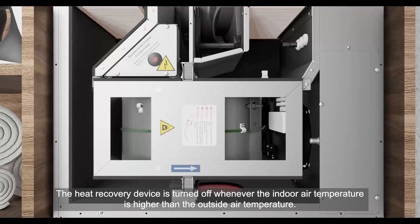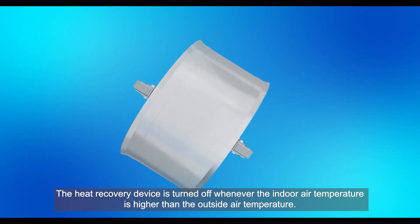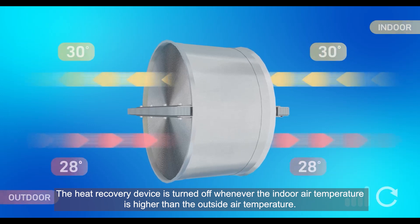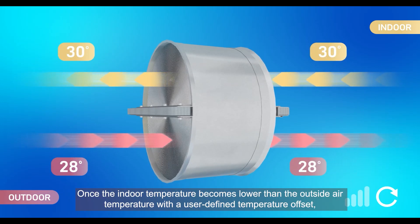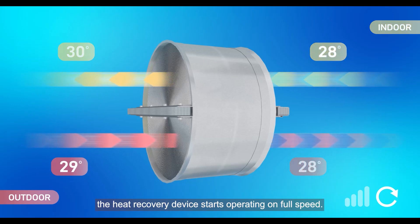The heat recovery device is turned off whenever the indoor air temperature is higher than the outside air temperature. Once the indoor temperature becomes lower than the outside air temperature with a user-defined temperature offset, the heat recovery device starts operating on full speed.